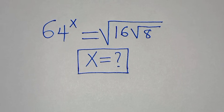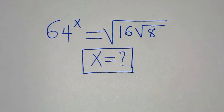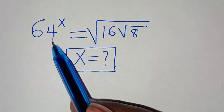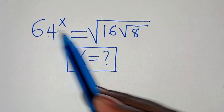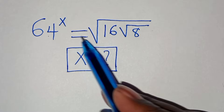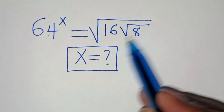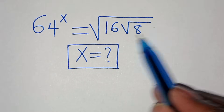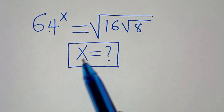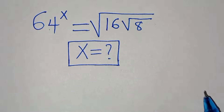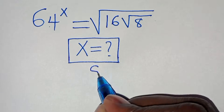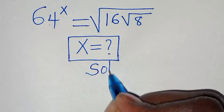Find the value of x given the equation: 64 to the power of x equals the square root of 16 times the square root of 8. Now let's provide a solution.